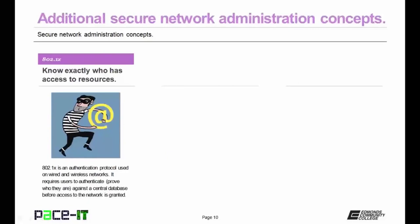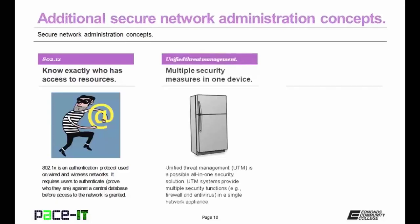If possible, you should implement 802.1x. This helps you know exactly who has access to your networks. 802.1x is an authentication protocol used on wired and wireless networks. It requires users to authenticate — prove who they are — against a central database before access to the network is granted. 802.1x is a good way to keep your network safe from nefarious users. You might also want to consider unified threat management — multiple security measures in one device. UTM systems provide multiple security functions in a single network appliance, but just be aware that a UTM system may also create a single point of failure for your network.